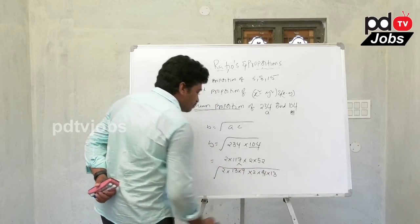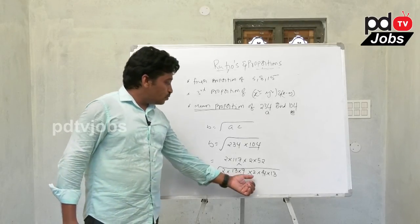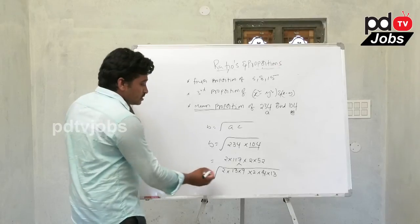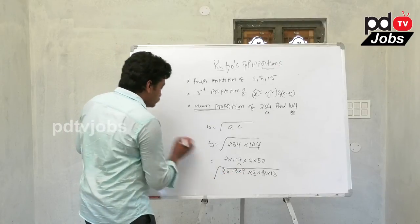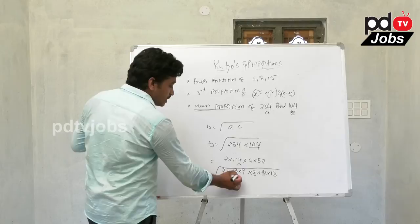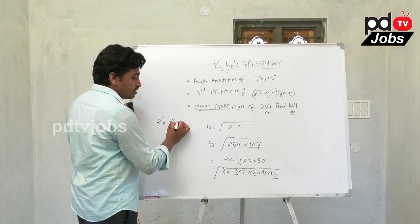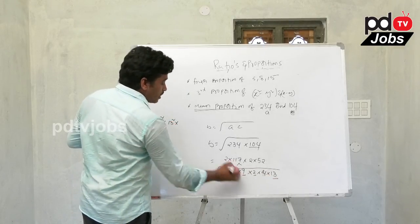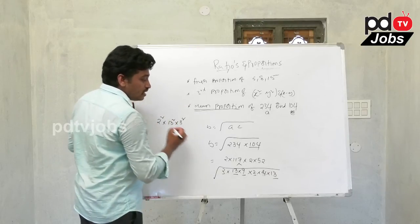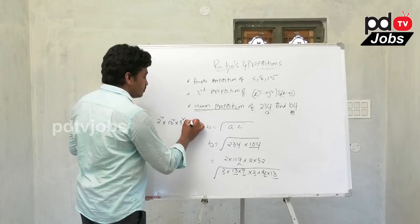We take the square root of 2 × 13 × 9 × 2 × 4 × 13. Grouping the pairs: 2 × 2 = 2², and 13 × 13 = 13². Also, 9 = 3² and 4 = 2².